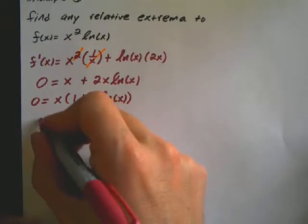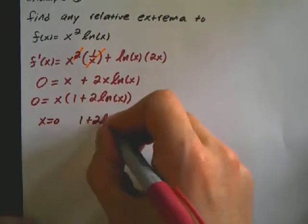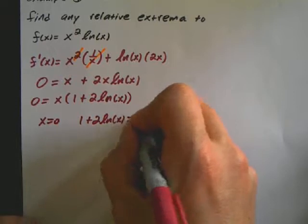So it's going to be 1 plus 2 ln of x. So my critical points are going to be x is equal to 0. And then when I solve this one, 1 plus 2 ln of x is equal to 0.